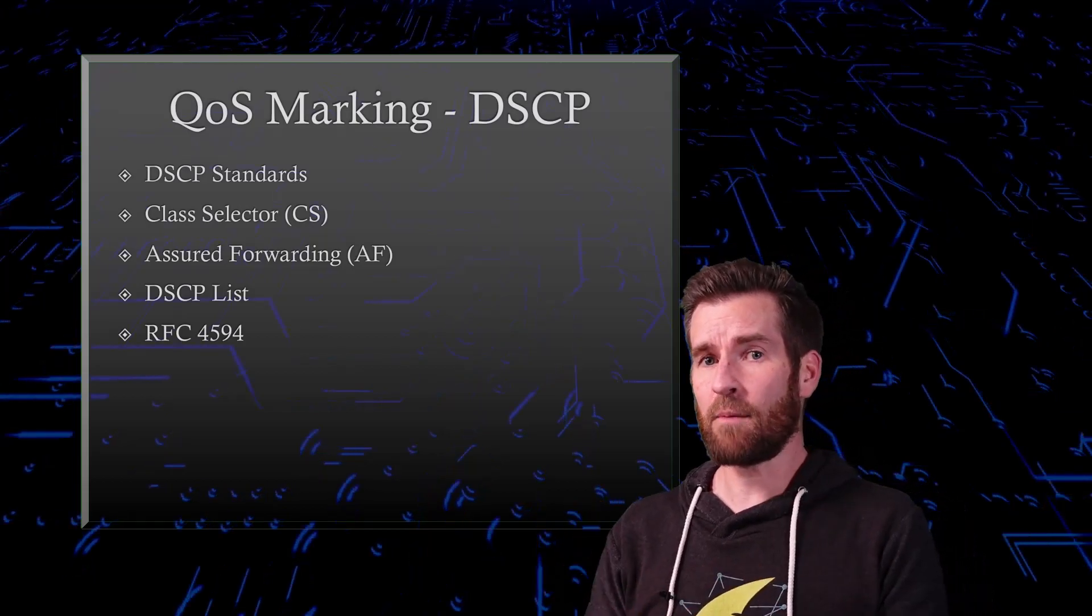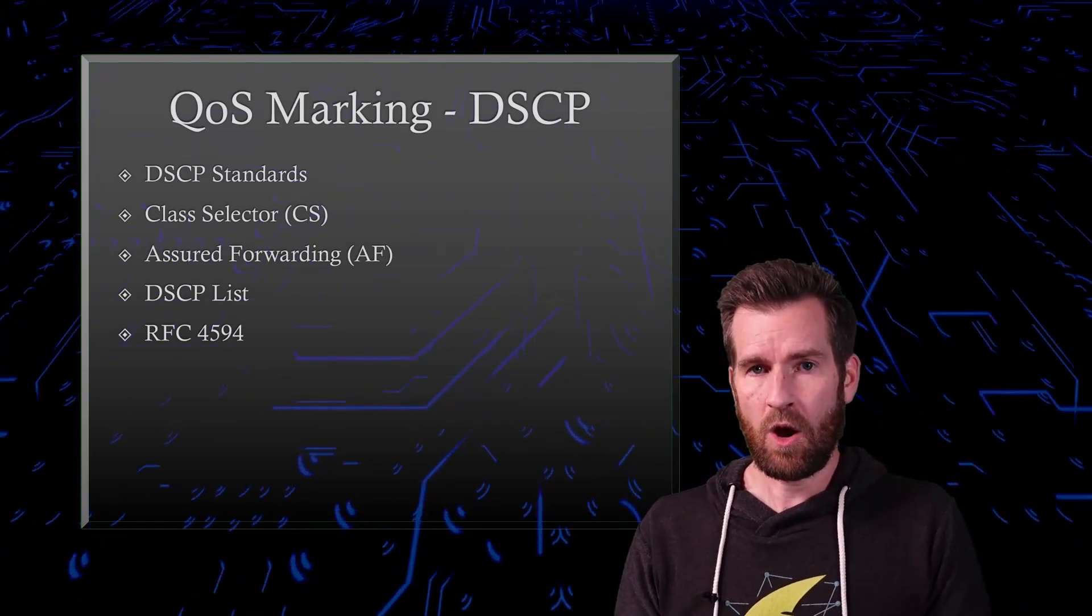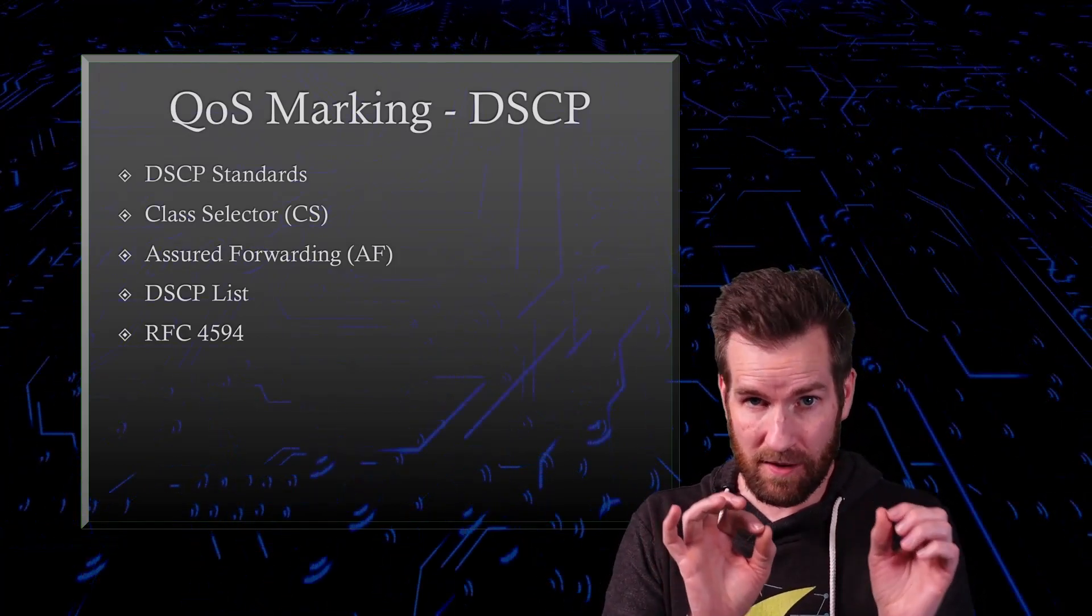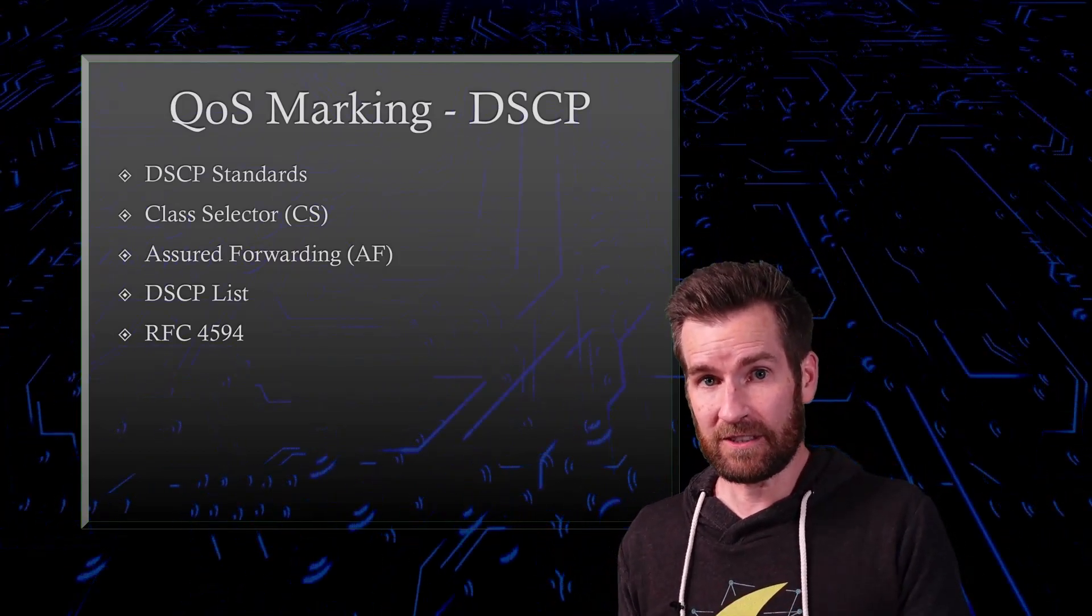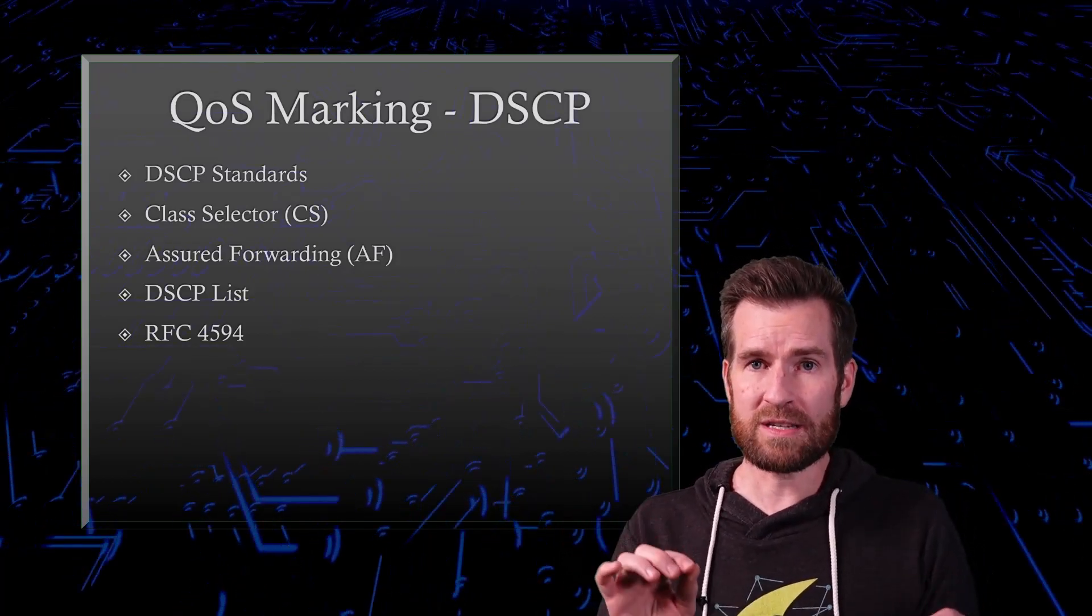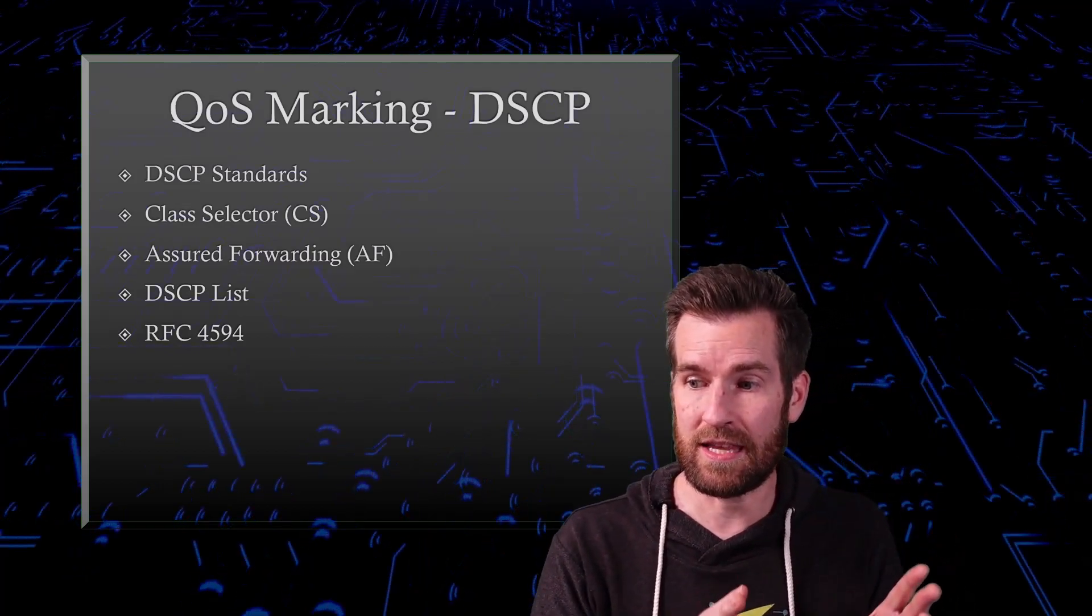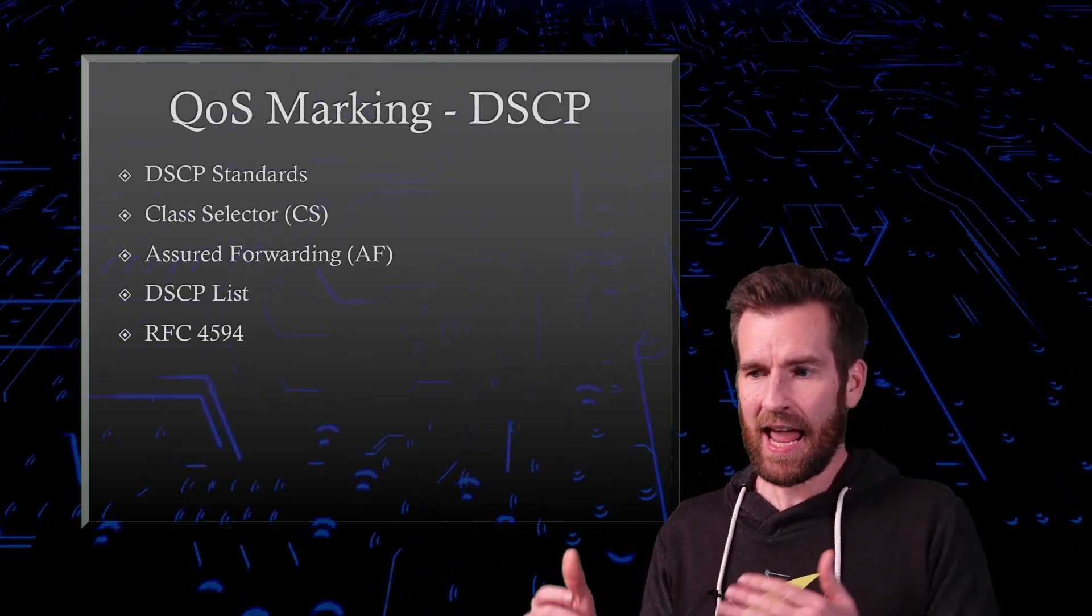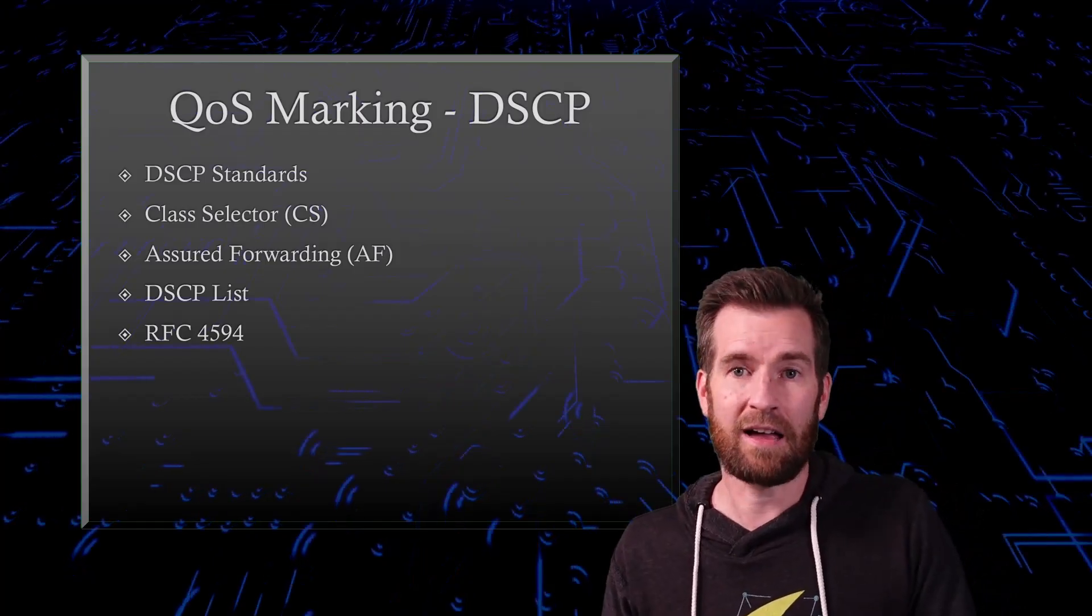In this video, we're going to start out by talking about some of the standards for DSCP. We're going to talk a little bit about the history of DSCP or what was before DSCP and what DSCP looks like now. There's a few different standards, so we'll talk about those. Then we're going to get more specific into the class selector and even more specific into the assured forwarding. We'll talk about the DSCP list and then we'll wrap this up by talking about RFC 4594.